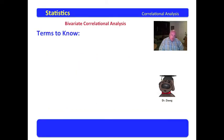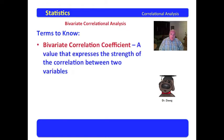Now, there are some terms you need to know, and some of these you will remember. A bivariate correlation coefficient is a value that expresses the strength of the correlation between two variables. Remember that bivariate means two variables, correlation is relationship, and coefficient is a value that would express the correlation between two variables.